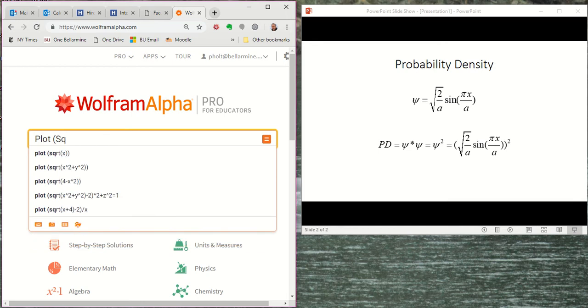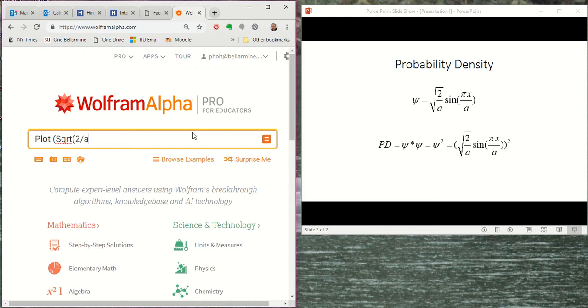So I'm going to type SQRT for square root. And then I'm going to be taking the square root of 2 over a. So I'm just going to divide 2 by a and close my parentheses. And then I'm going to multiply that. I'm putting a space here. I could add an asterisk if I wanted to just make it clear. Wolfram Alpha can interpret either way.